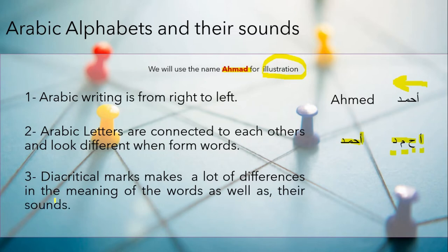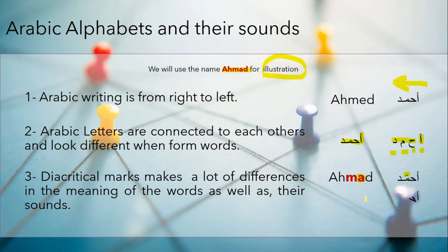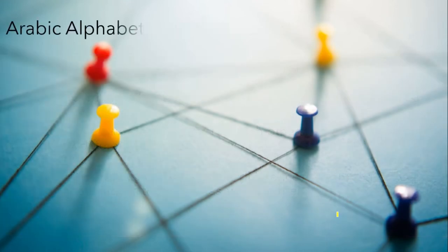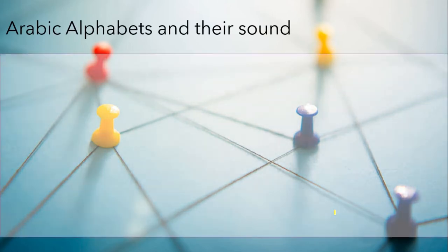The third thing we need to understand is the diacritical marks. They make a lot of difference in the meaning of the words and in their sounds. For example, if you use the Fathah — the small line above the Mim — we will pronounce it 'Ahmad' with A. However, when it's Kasra — the line coming below — we will pronounce it 'Ahimed' rather than 'Ahmad.' We will have a full lecture about diacritical marks to understand exactly what they do.